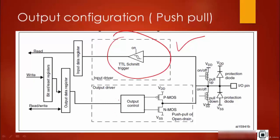In output configuration, the input circuit will always be on. That means you can read the IO state of that IO pin through the input data register — a read is also possible.